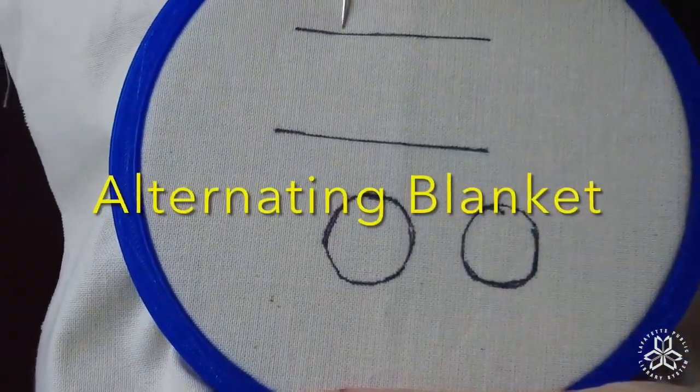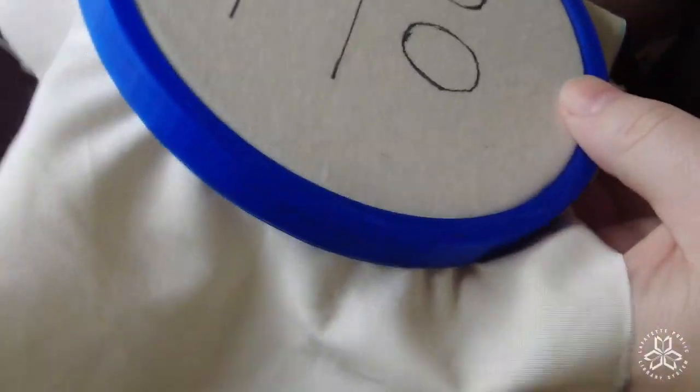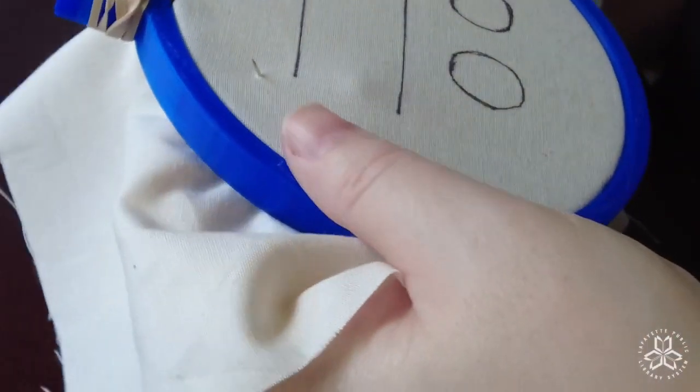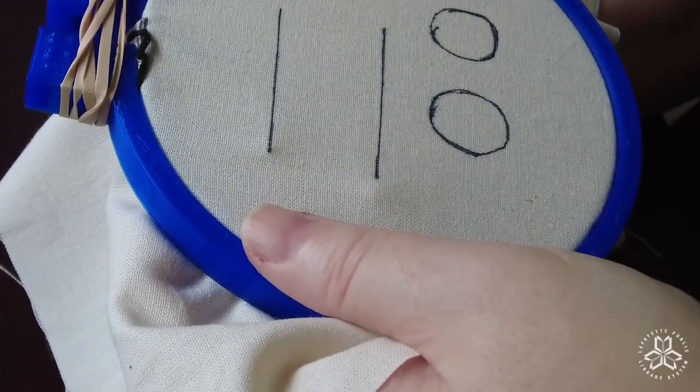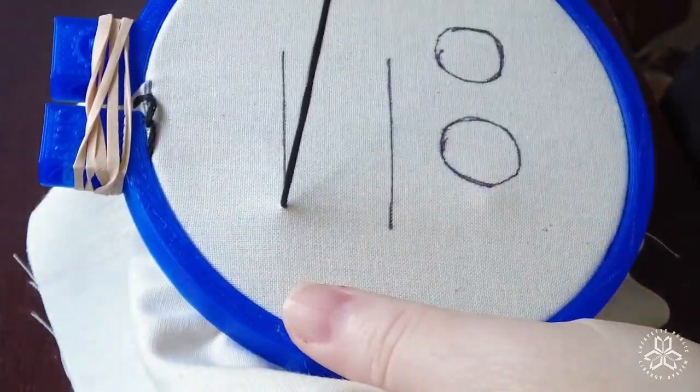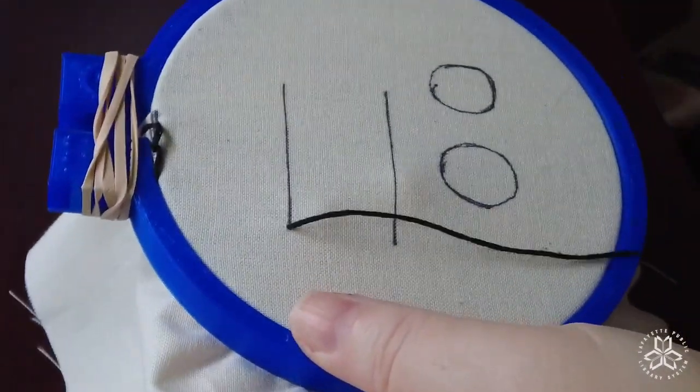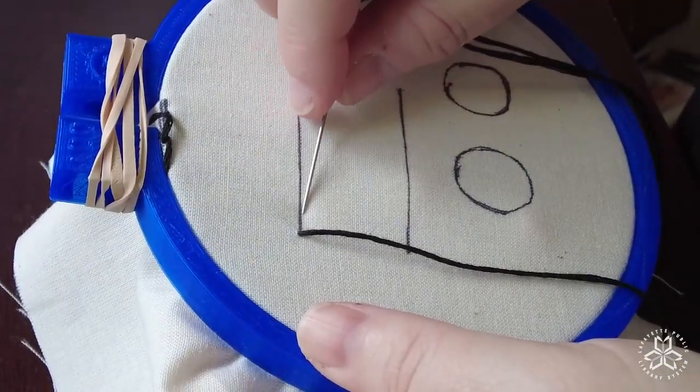So next up is the alternating blanket stitch. So I've moved my lines up a little bit and we're going to start just like we did for the blanket stitch. It's much the same thing except it's going to alternate top and bottom. So above the line and below the line or side of the line to the other side of the line.